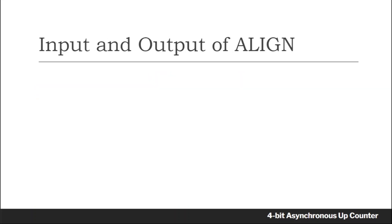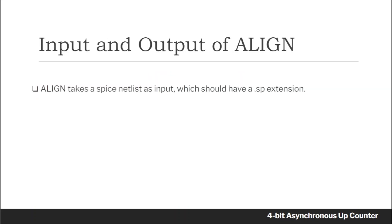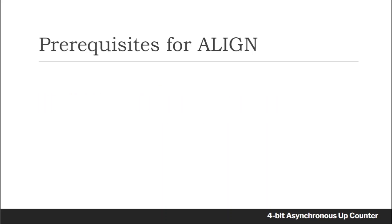Regarding the input and output of Align: the input format is a SPICE netlist that should have a .sp extension, whereas the output files generated by Align are in the GDS and LEF formats.